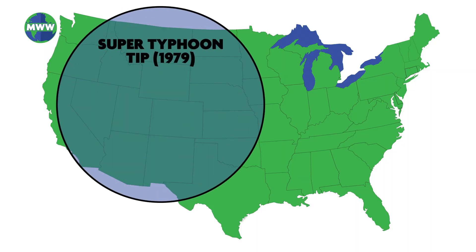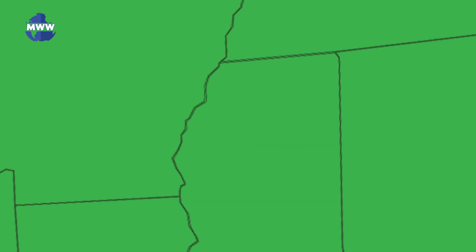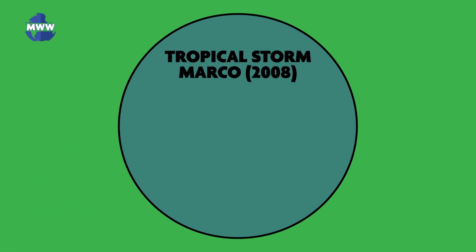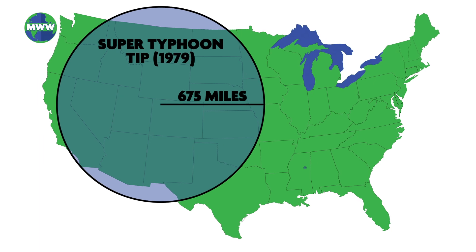Super Typhoon Tip in 1979, the most enormous storm ever recorded, extended over 675 miles in radius. The smallest storm, Tropical Storm Marco in 2008, reached a diameter of 23 miles. The winds of a tropical cyclone can extend even further than the storm itself.